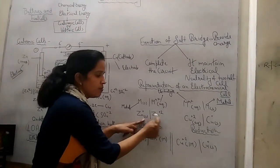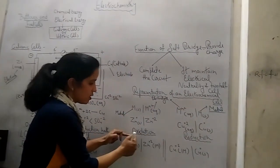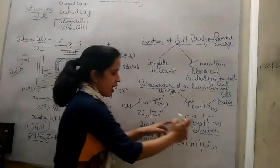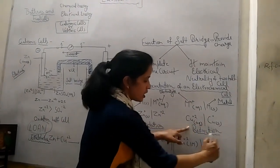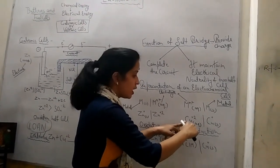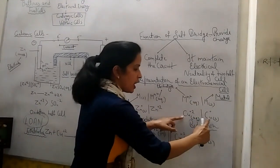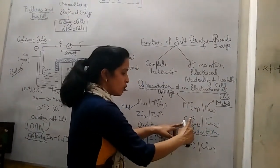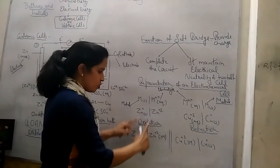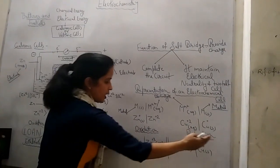Zn in solid form loses 2 electrons to become Zn²⁺ and goes into the electrolyte. That is the left-hand side where oxidation occurs. On the right-hand side there is reduction — Cu²⁺ from the electrolyte takes 2 electrons and becomes neutral copper. So Cu goes from plus 2 to zero, which is reduction; and Zn goes from zero to plus 2, which is oxidation.